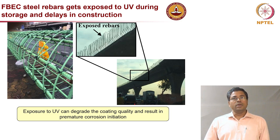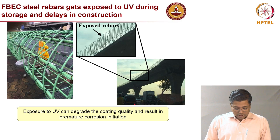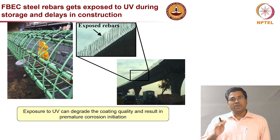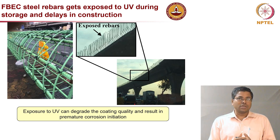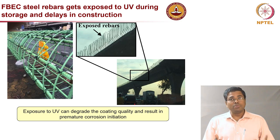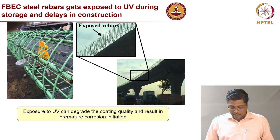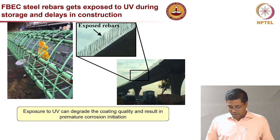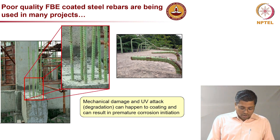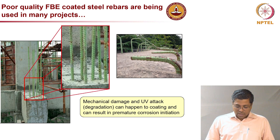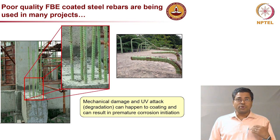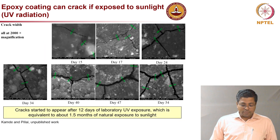These pictures collected from construction sites in major Indian cities show bars exposed to sunlight, indicating construction delays. During the whole process, these bars can get exposed to sunlight for weeks, months, or even years. This means exposure to UV radiation. Here is another example with a lot of scratches and damages, exposed to sunlight — this structure had significant construction delays.